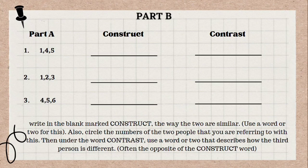As you all can remember, in Part A, we have photos with corresponding numbers. On this side, we have a group of numbers which refers to the photos from the previous slide. To determine the construct, we will choose two numbers which we think are similar, then describe why they are similar.